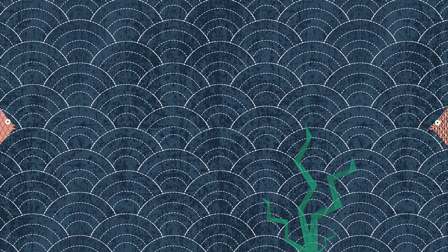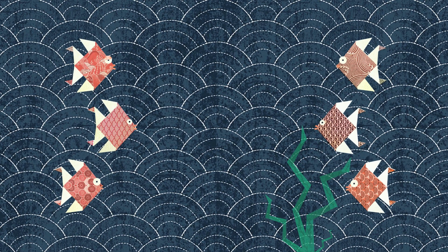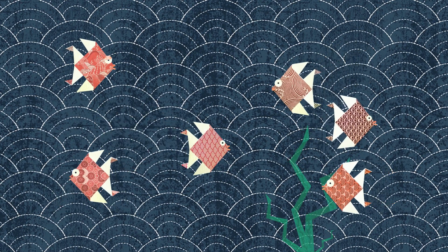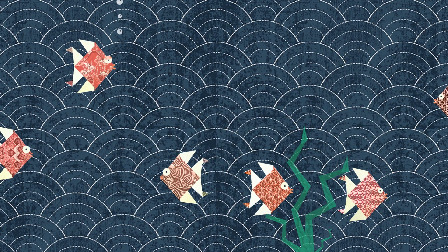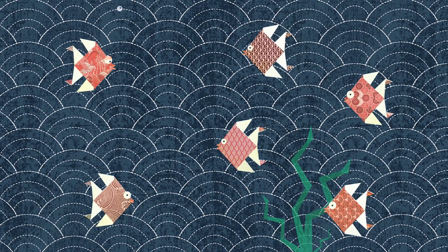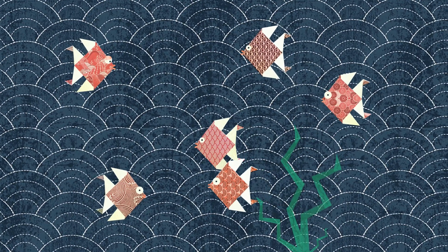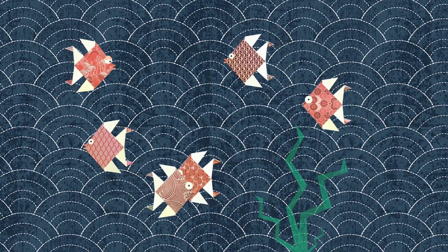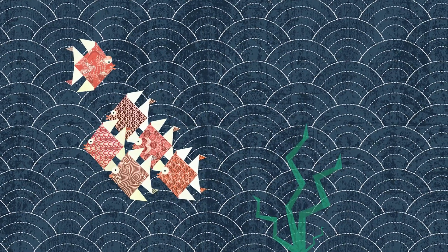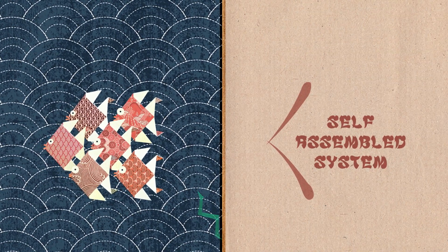What happens if we keep adding some more fish? At first they might continue swimming alone and randomly for a while. Later on, at some point, we might notice that our fish are beginning to join together and even start swimming all in the same direction with an ordered structure. They have just built a self-assembled system.